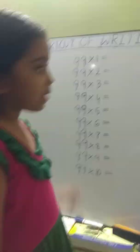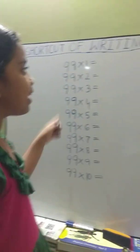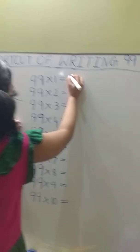Now I am explaining the trick for the 99 times table. Look at the board. First we should write 0 to 9.